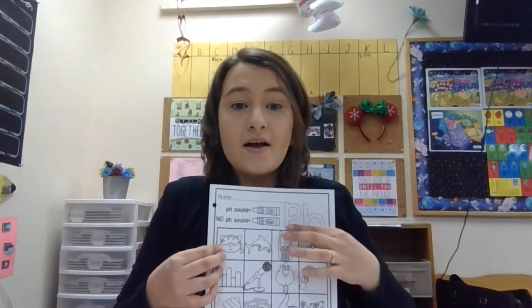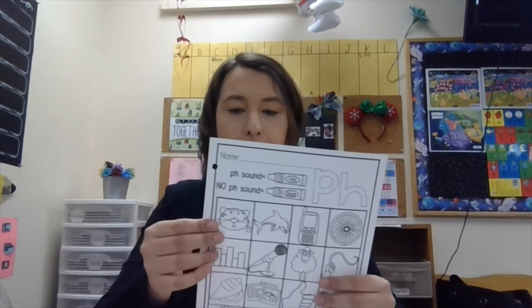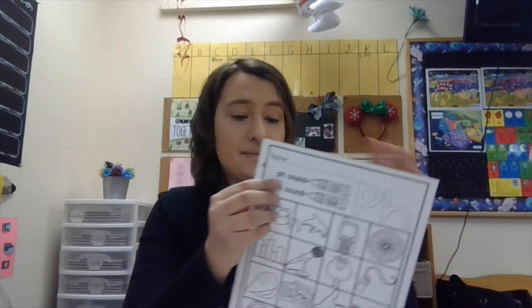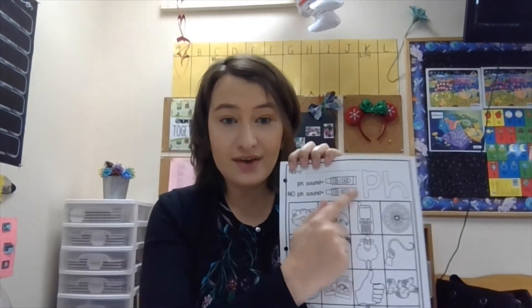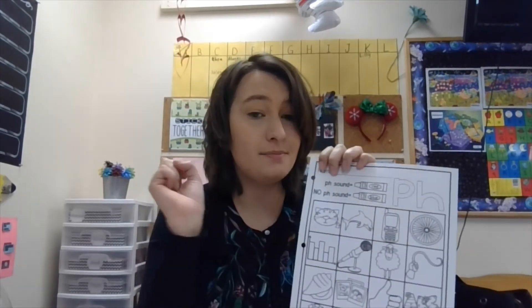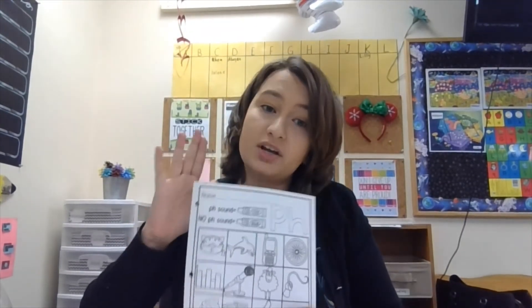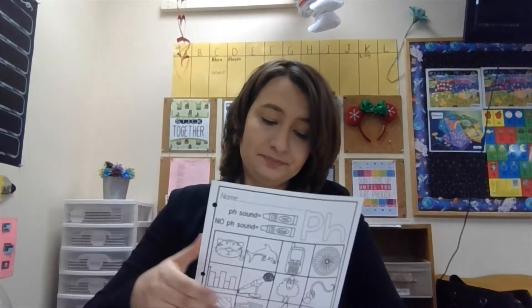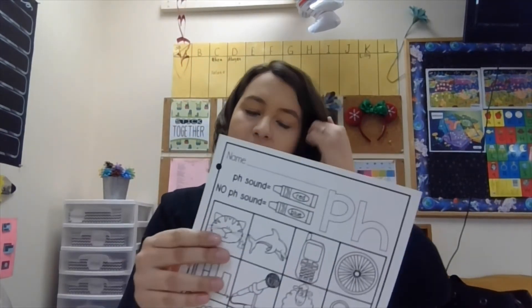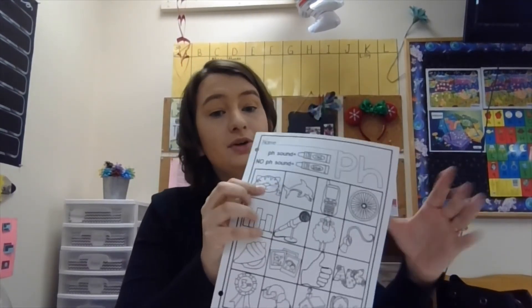All right. If you are done, we're going to move on to the next PH one. Remember PH makes. So it says PH sound, color red. No PH sound, color blue. So you need a blue and a red crayon or colored pencil. I don't want you to use marker because then it's going to bleed through the other side to the other part of your book. So just crayon or colored pencil. So we're going to go through each of these and I want you to color them red or blue as we go.